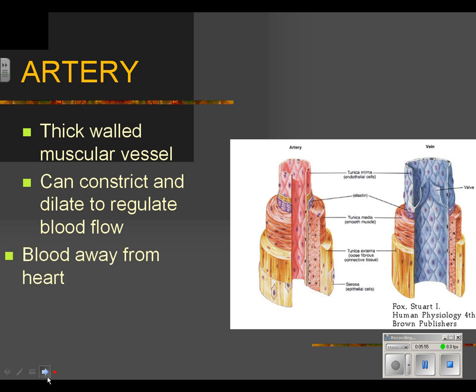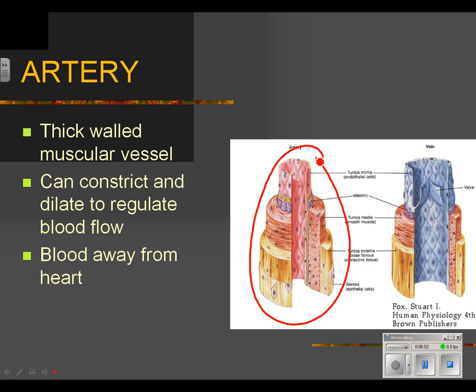The artery is a very thick-walled muscular vessel. The musculature around an artery allows it to constrict and dilate to regulate blood flow. An artery will constrict if there's less blood needed, and dilate if there's more blood needed. You see this in your skin when you're cold or hot — when your skin turns red, it's because arteries have dilated to allow more blood into that area. Arteries carry blood away from the heart.